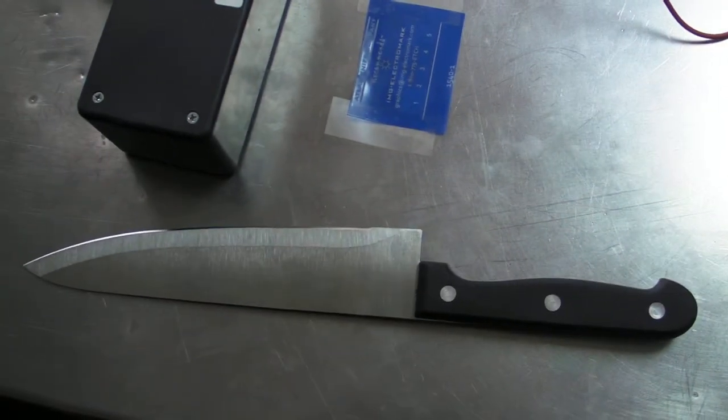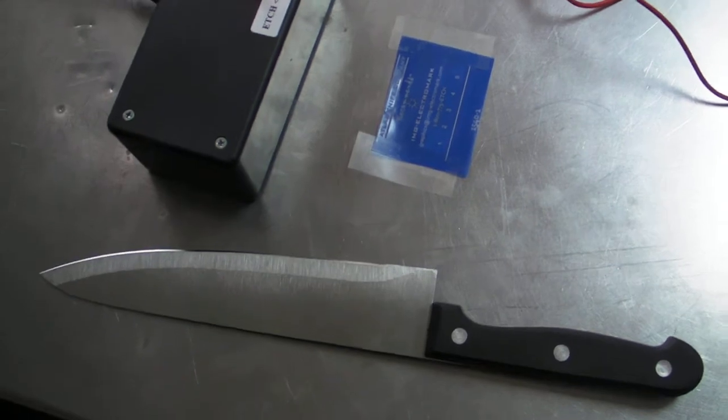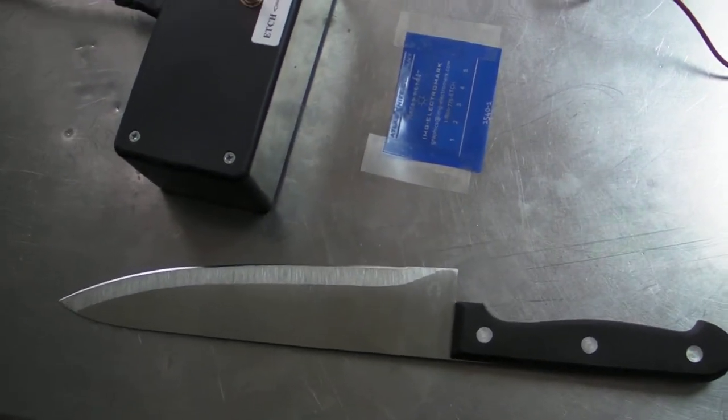What we've got is a cheap practice stainless steel kitchen knife. They cost a buck at the Dollar Tree, pick them up at garage sales, whatever.